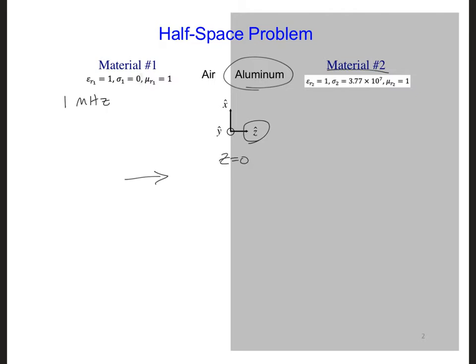And the boundary between the air region and the aluminum is at Z equals 0. We call this kind of a problem a half-space problem because half the space is material 1 and half of the space is material 2. This seems highly simplified, but we use it in electromagnetics in a lot of different scenarios.